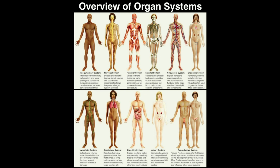Also covered in this class is the skeletal system, which is really just bones. The bones provide support, and they protect internal body parts. For example, the rib cage protects the heart and the lungs, and the skull obviously protects the brain.